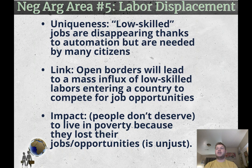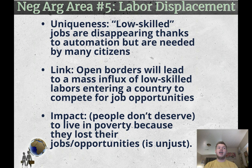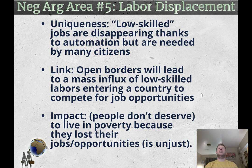Fifth is labor displacement — another common argument requiring careful phrasing. It is not respectful to say migrants just want to come and take jobs. But an argument can be made that in certain low-skill fields that don't require high training, migrants needing those jobs would move to a country with a limited number of them, resulting in too many people for not enough jobs — regardless of who is trying to get them. Those jobs are already disappearing due to automation. If too many people move to a place for a limited number of jobs, we'll see people living in poverty because they lost their opportunities, which is unjust.